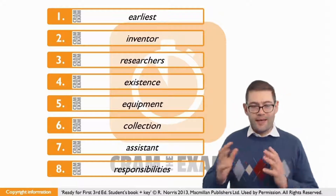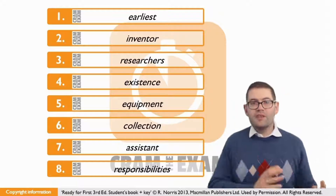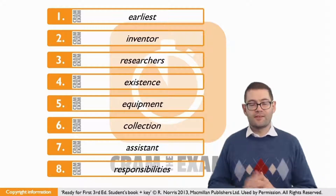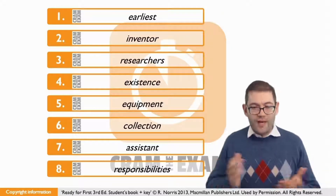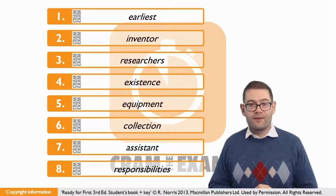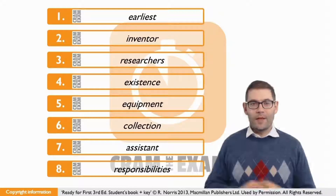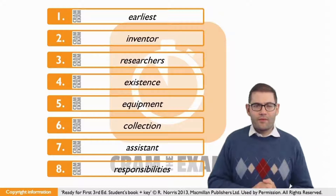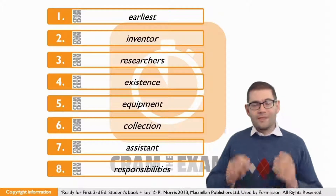Question number six — once again, easy peasy. Looking at the language structure, we've got an adjective before the gap but no noun that the adjective is modifying. We've got an article before the adjective but no noun to which that article refers. Of course we have to provide the noun here, and the noun is 'collection.'